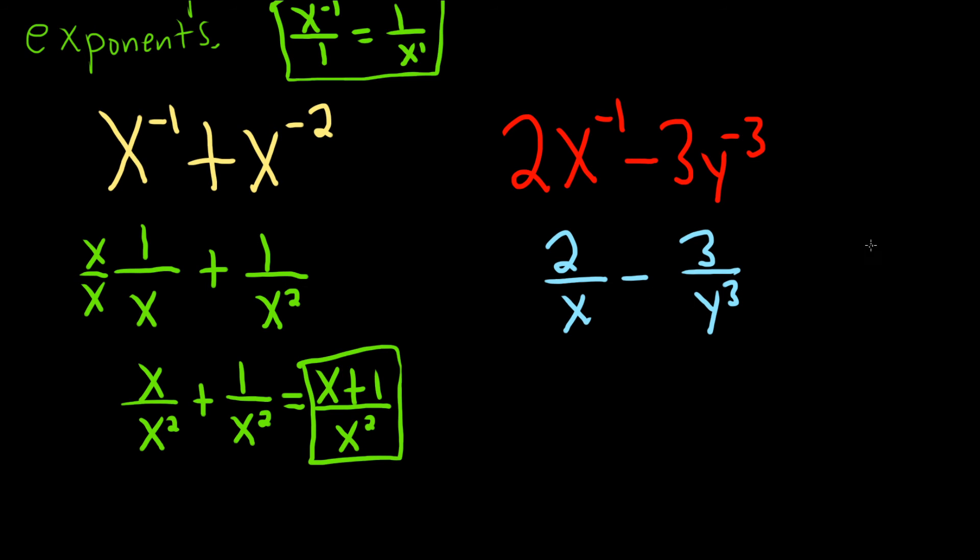And this time, the LCD, you just multiply to get it, so x times y cubed. So on the left, we're missing y cubed, so we multiply by y cubed over y cubed.